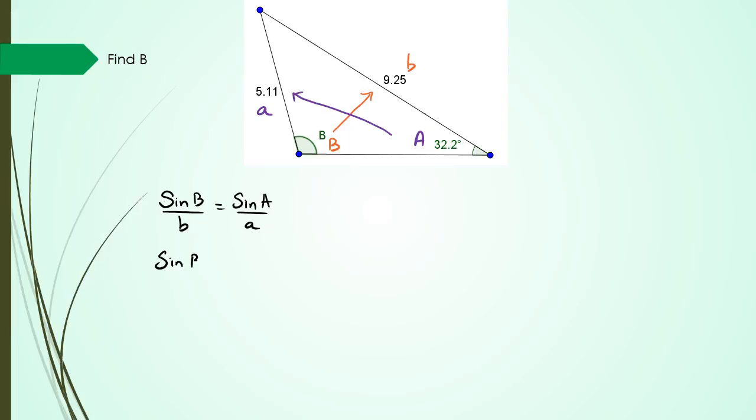So when I do this, my unknown angle is B, so I'm going to leave it as it is. Little b is 9.25 equals sine A which happens to be 32.2 divided by little a which is 5.11.